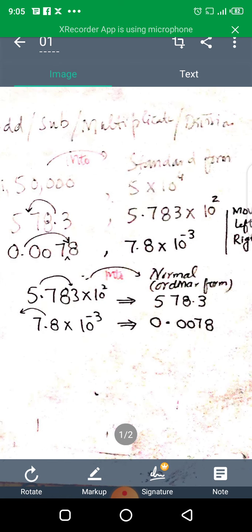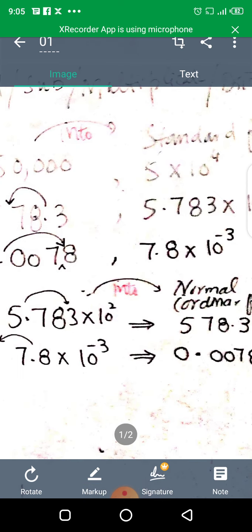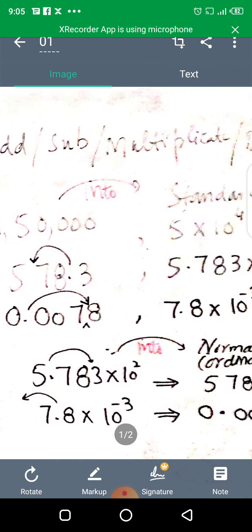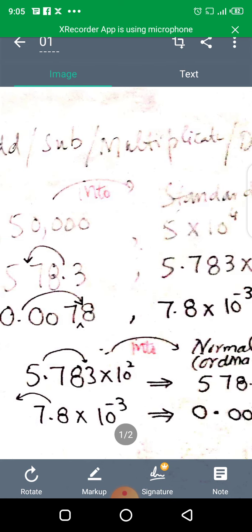Similarly, here we have 578.3. Here we have a value more than ten. If we have greater than ten, then we move it to left side. We move it to left side so we have decimal before eight, and now we have decimal after five.